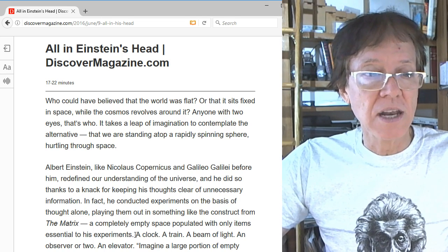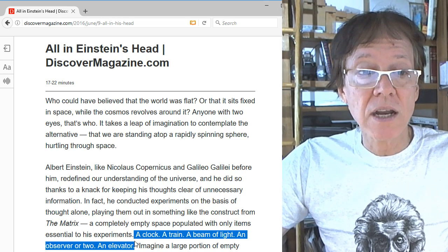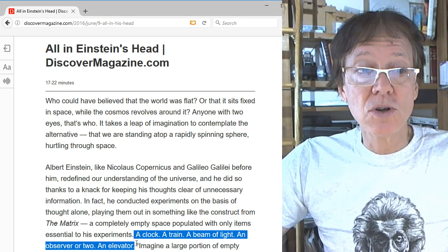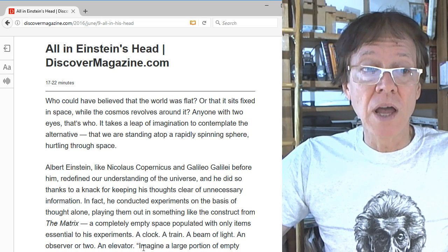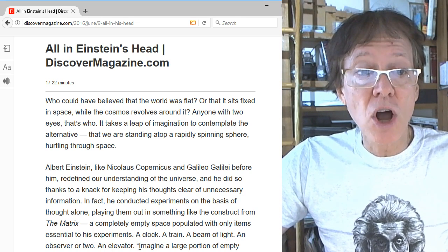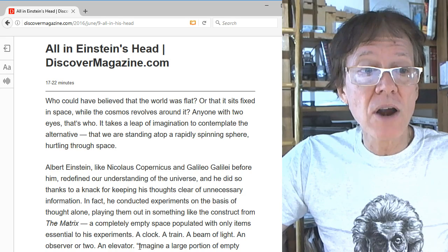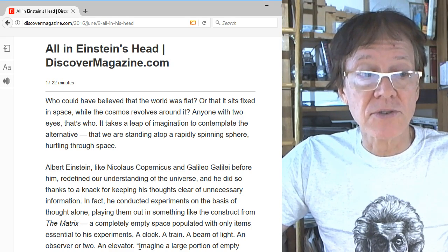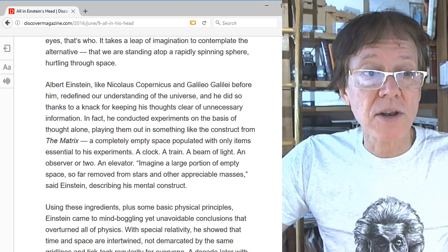And here are his items that he has in his universe. A clock, a train, a beam of light, an observer or two, an elevator. And then you hear this quote from Einstein: Imagine a large portion of empty space so far removed from stars and other appreciable masses, said Einstein, describing his mental construct.